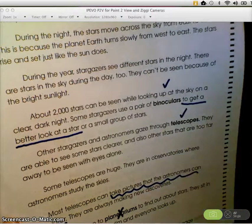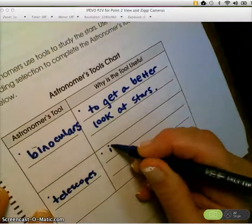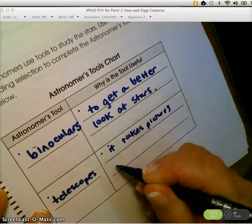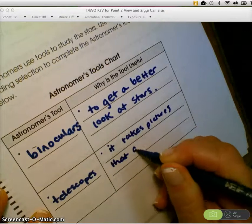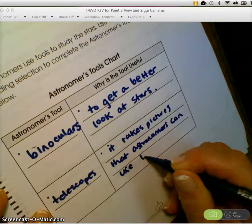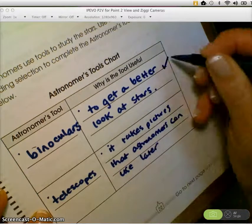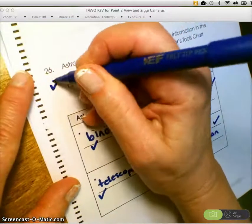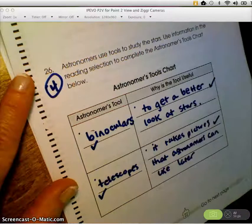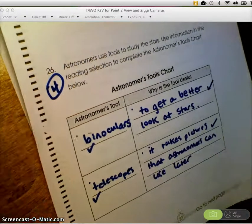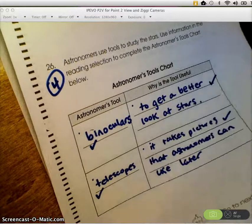Take pictures that the astronomers can study later. So why is this tool useful? It takes pictures that astronomers can use later. One, two, three, four. I got four and I'm going to circle it. That's a four point answer. You might want to double check with your teacher on this one to make sure that you're scoring it correctly. Your teacher may have already scored it for you. Okay, go on to 27.